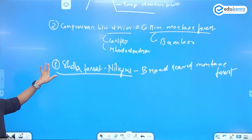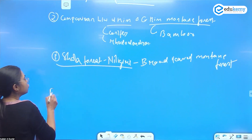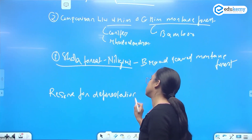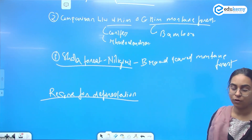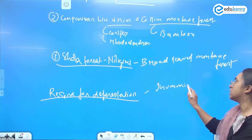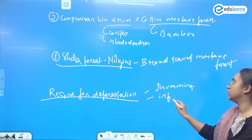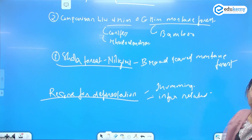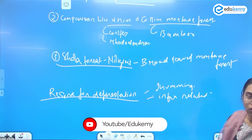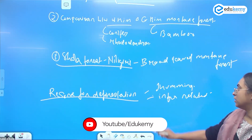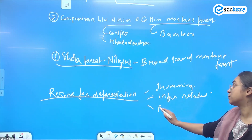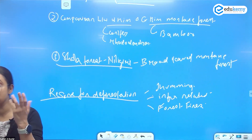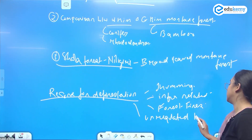Don't stop at just listing forest species. You can also write about reasons for deforestation in the montane forest — this is a detailed question. Reasons include jhum cultivation (shifting cultivation), forest fires, infrastructure-related urbanization such as construction of roads, tunnels — for example the Atal Tunnel — which leads to deforestation. Also mention unregulated tourism as a major cause.